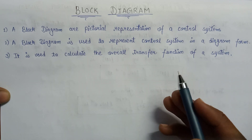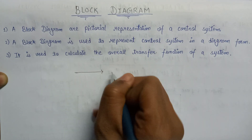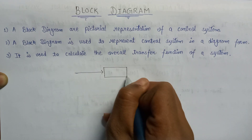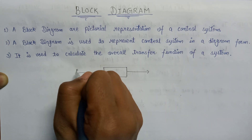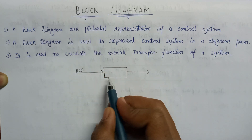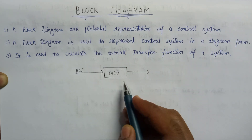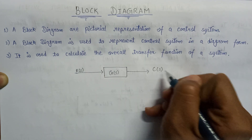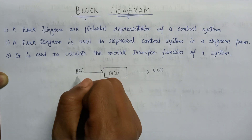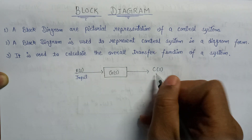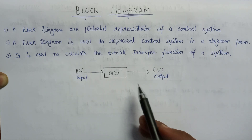Let us represent a system by the help of a block diagram. In this system, the input R is applied to the control system having gain G, and we get the output C from this control system. This is a simple and basic representation of a block diagram — R is the input and C is the output of the control system.